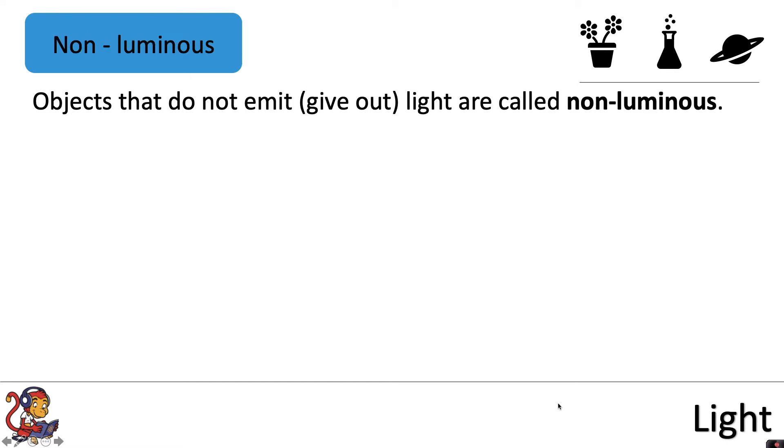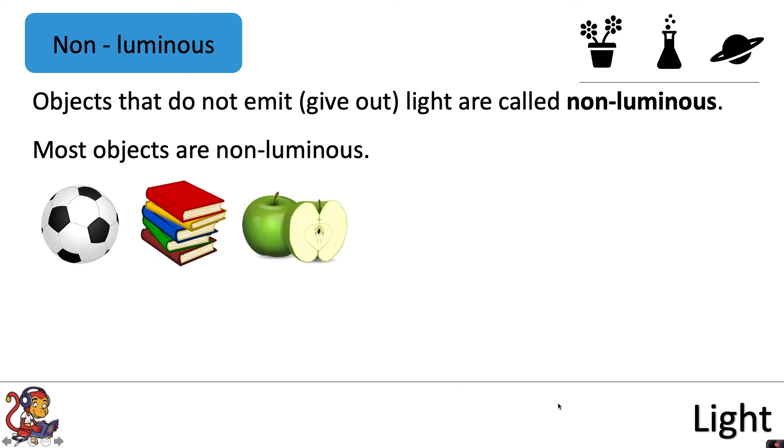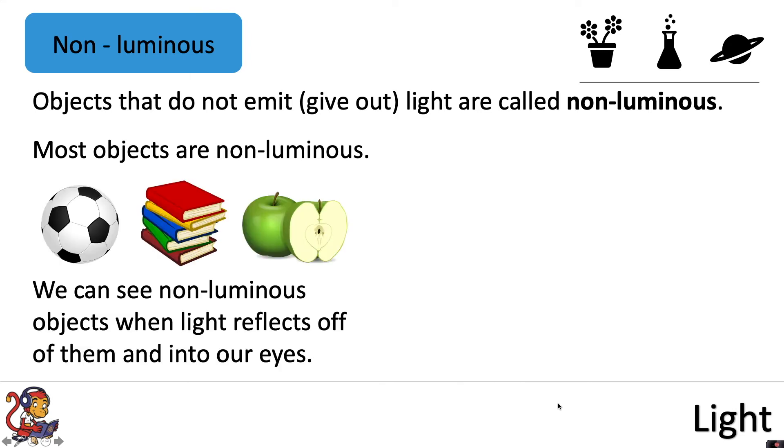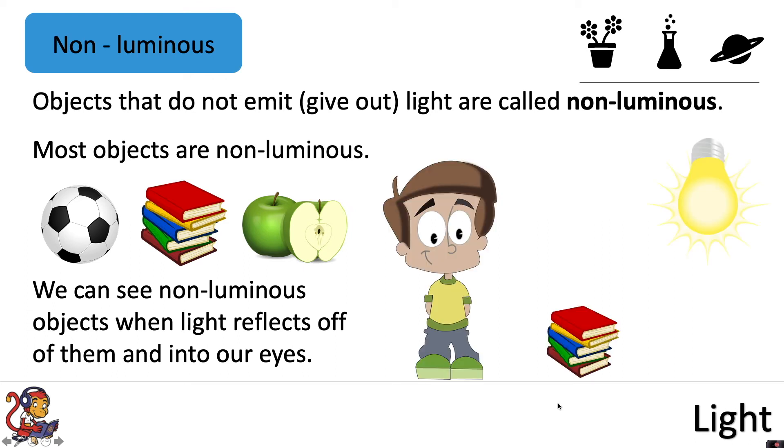Objects that do not emit light are called non-luminous. Most objects are non-luminous, for example, footballs, books, and apples. We can see non-luminous objects when light reflects off them and into our eyes.